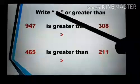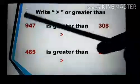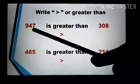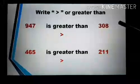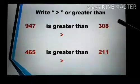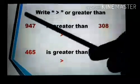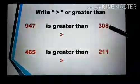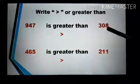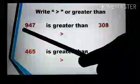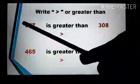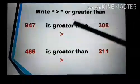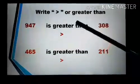Now we have 947 and 308. First of all we will compare the first digit: this is 9 and this is 3. 9 is bigger, so 947 is greater than 308. We use this symbol for greater than.